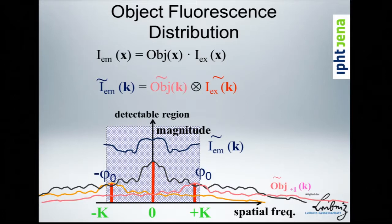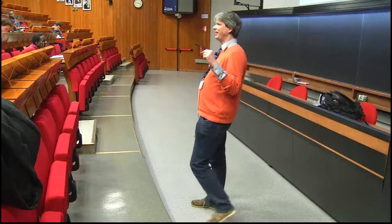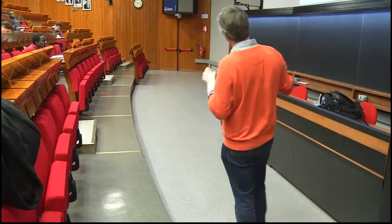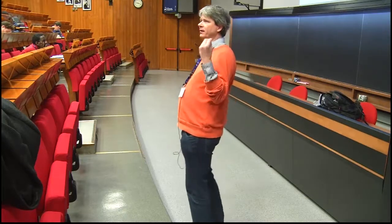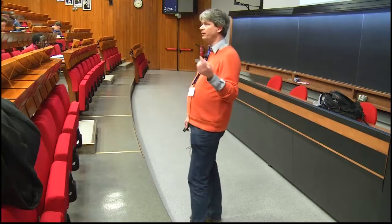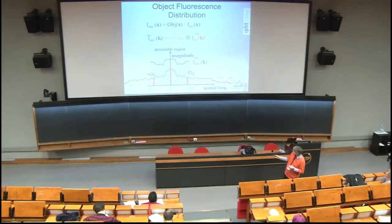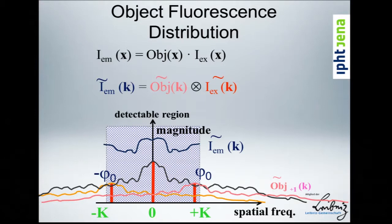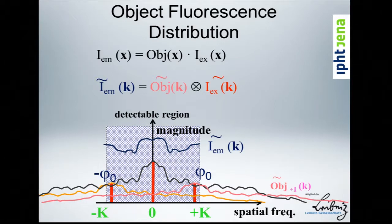We have these three shifted object components. The Abbe limit constrains what spatial frequency range we can obtain. If we were able to unmix that mess — from our measurements get back our object components — then we can shift them where they should belong, stitch them together, and get a high-quality high-resolution image. That's the whole point of structured illumination microscopy.